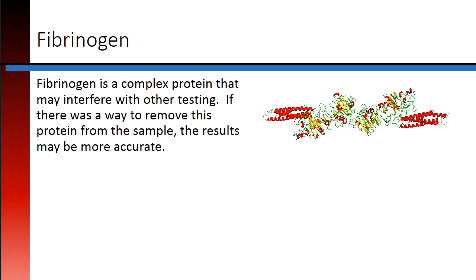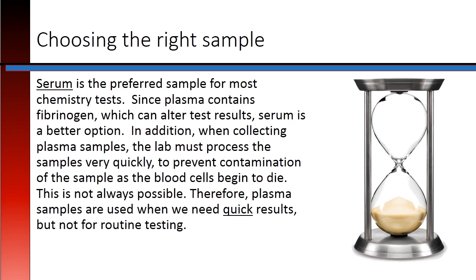Fibrinogen is a complex protein that may interfere with other testing. If there is a way to remove the protein from the sample, the results may be more accurate. Serum is the preferred sample for most chemistry tests. Since plasma contains fibrinogen, which can alter test results, serum is a better option. In addition, when collecting plasma samples, the lab must process the samples very quickly to prevent contamination as the blood cells begin to die. This is not always possible. Therefore, plasma samples are used when we need quick results, but not for routine testing.